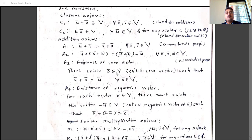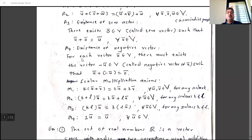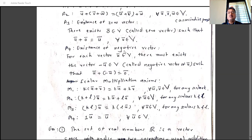The zero vector is denoted 0̄ and is not the usual number zero. Its property is that Ū + 0̄ = Ū for every Ū in V. If zero vector does not exist in the set, then V is not a vector space. A4 is the existence of negative vector: for each Ū in V, there exists −Ū in V such that Ū + (−Ū) = 0̄.